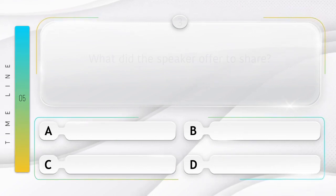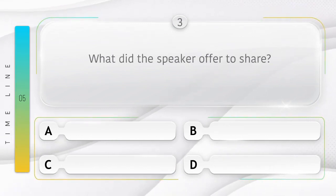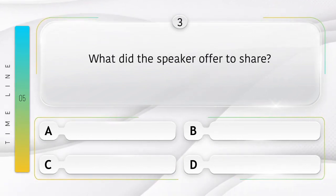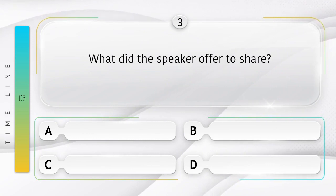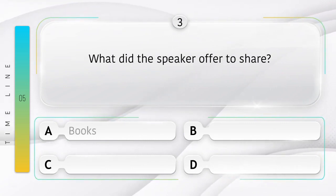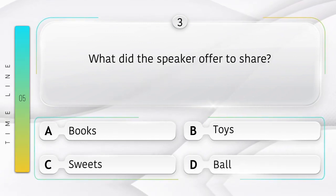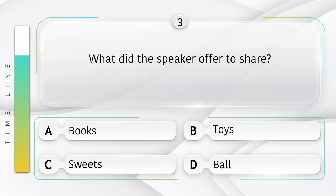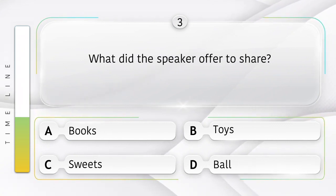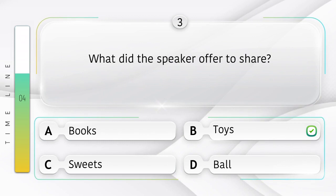Train. What did the speaker offer to share? Vakta ne kya saajha karne ki pesh kash ki? Option is A. Books. B. Toys. C. Sweets. D. Ball. Answer is option B.